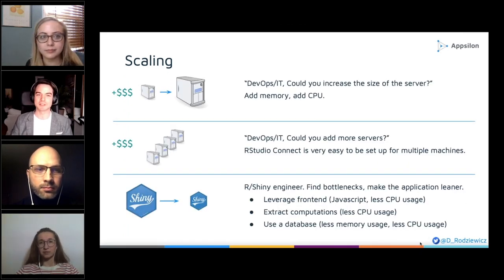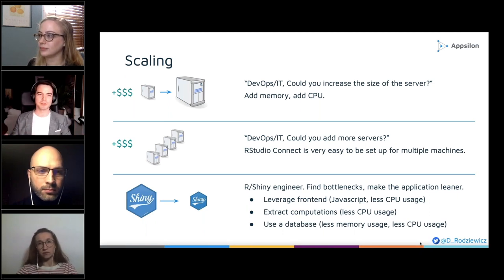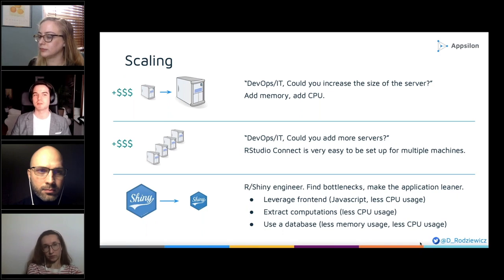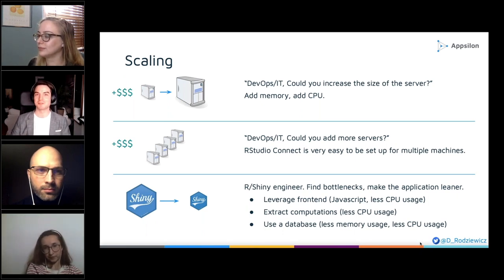The first two approaches are actually fairly simple. The first step is to ask DevOps or IT to increase the size of the server — add more CPU, add more memory — which right away gives you more users. Of course, you have to pay for that, and it can be difficult to find the budget, especially if you suddenly have 10 times as many users and need a really big machine.